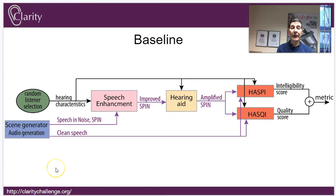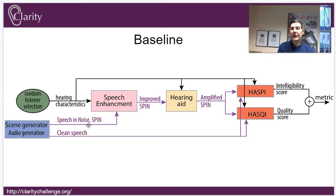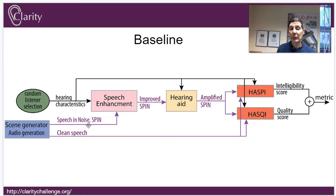Let's look at the baseline that we're giving you. First we need to generate some examples of speech and noise, so we have a scene generator that creates those examples. We'll give you data you can just download — you don't need to run the scene generator if you don't want — but it's there if you want to augment the data with standard augmentation techniques, which is allowable within the rules.